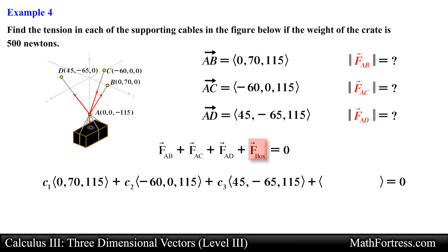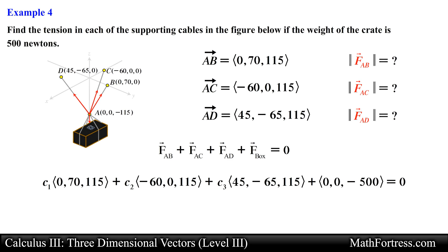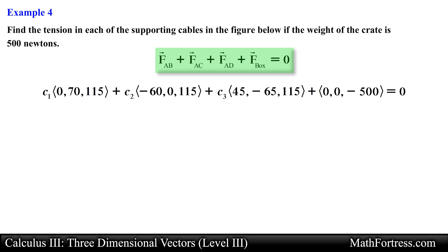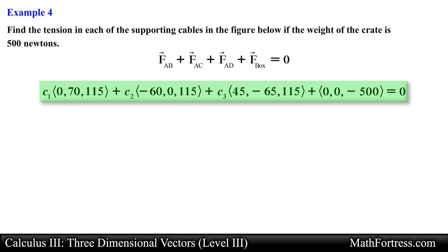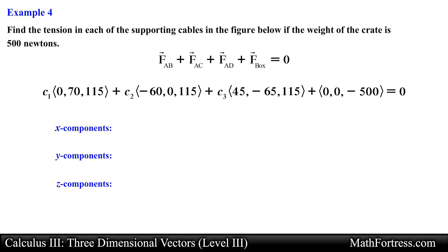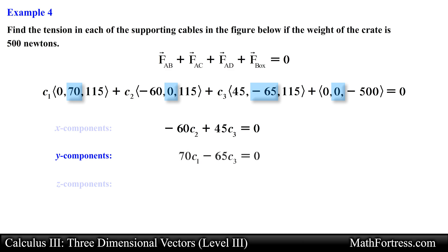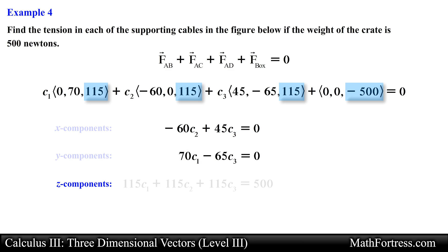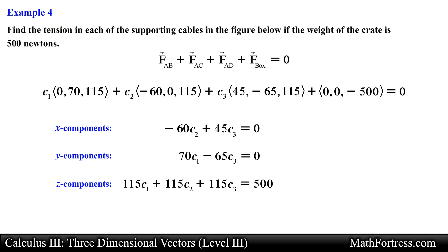We also express the weight of the crate as a force with only one component — negative 500 Newtons along the negative Z axis. Now we find the sum of all the forces and set it equal to 0. Next we extract three separate equations, one for each component: one for the X component, one for the Y component, and one for the Z component. We are now facing a system of three equations with three unknowns.